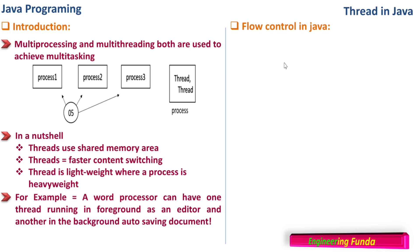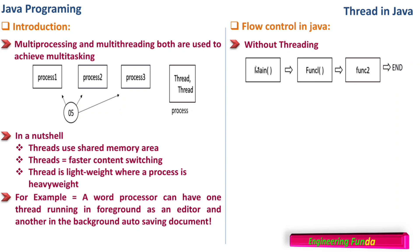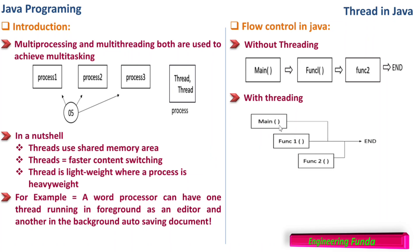Here is the flow control in Java for threads. First we are looking at the system without threading. You have a main function, then in the main function you call function one, in function one you call function two, and then the control is returned back to main and the process ends. The process ends only when all three functions — the main function, function one, and function two — have all ended at a single point.